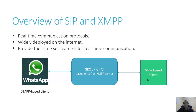Since both protocols are widely deployed over the internet, the question arises: is there any way we can make them work together? Is there any way we can build, for example, a group chat application that can help an XMPP client such as a WhatsApp client connect to a SIP-based client?